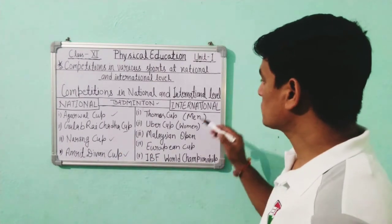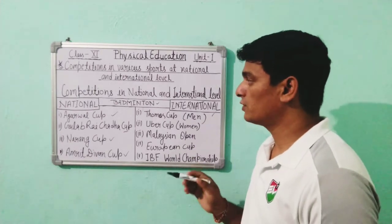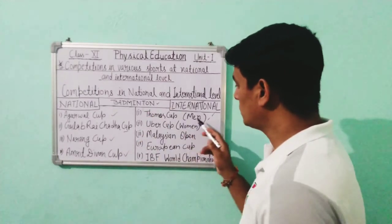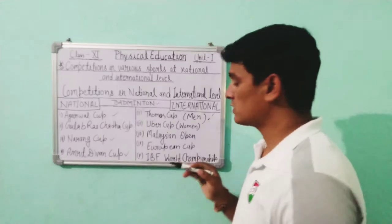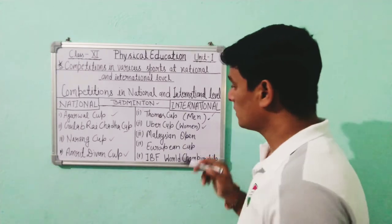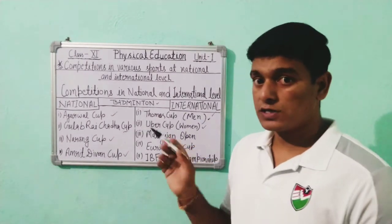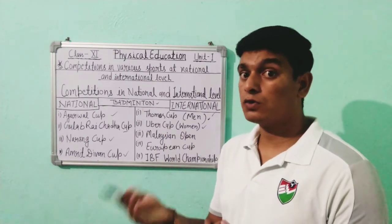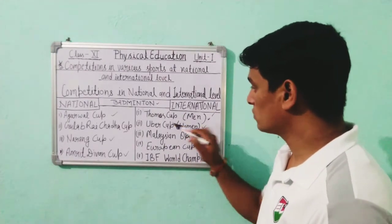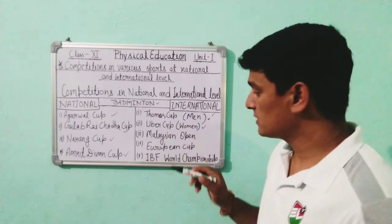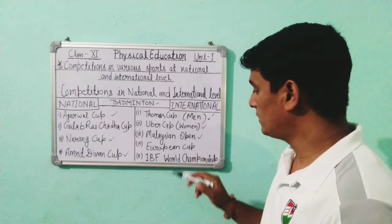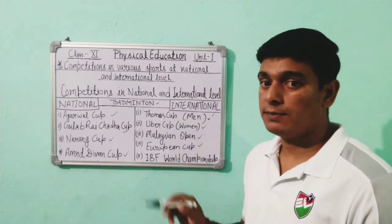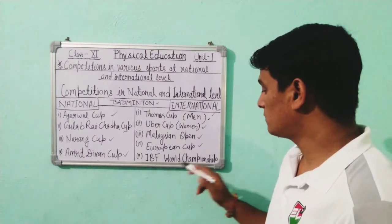Other national competitions of Badminton include Naraika Cup and Amrit Dewan Cup. At the international level, the Thomas Cup is for men only, and the Uber Cup is for women only. These questions are frequently asked: Uber Cup is associated with Badminton — but you should also know it is specifically for women. Other international competitions include the Malaysian Open, European Cup, and IBF World Championship — IBF stands for International Badminton Federation.